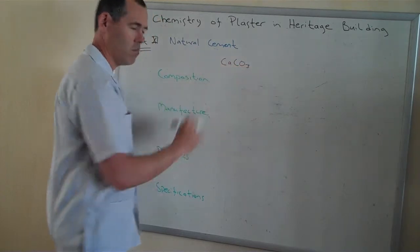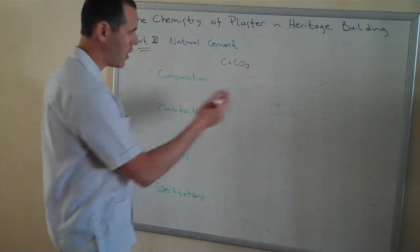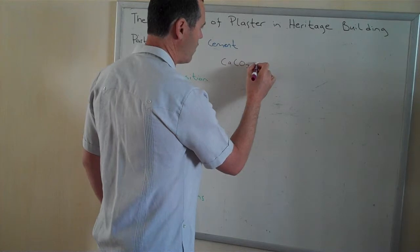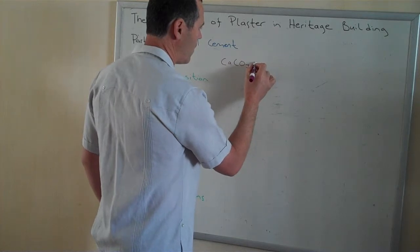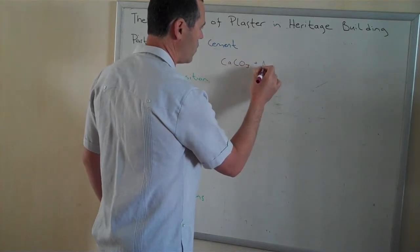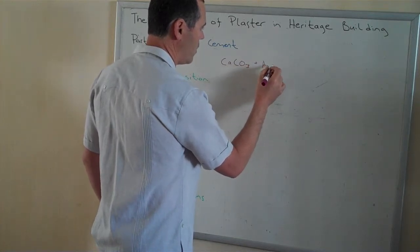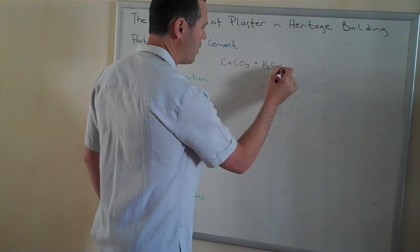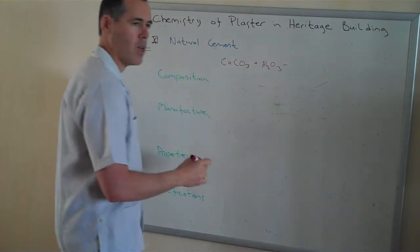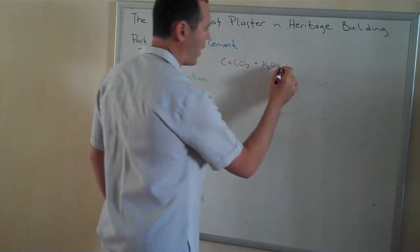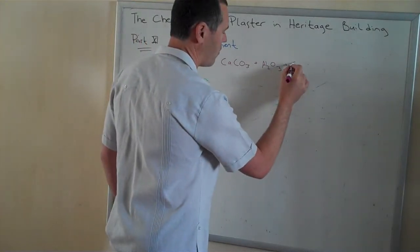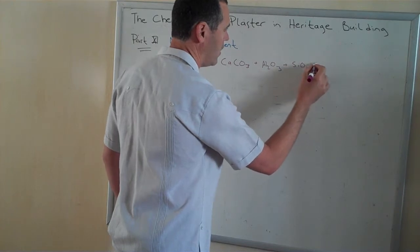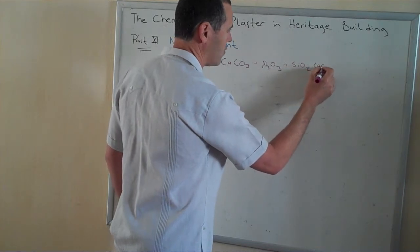You have limestone — the calcium carbonate — but now the clay comes in; that's added with the alumina, and then as before, we'll have the silicon dioxide that's active.